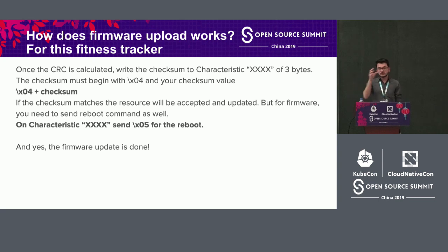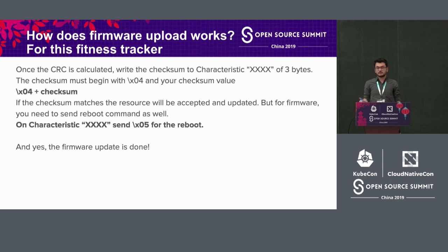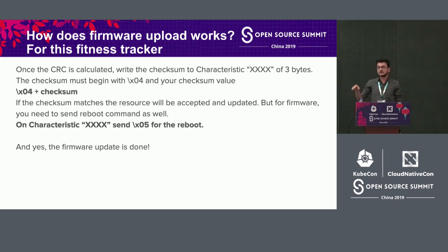Here's how the checksum flow works: after initiating with the 0x01 byte and file size, the firmware is sent 4 bytes at a time to the firmware upload service until it reaches 99%. The firmware is already transferred to the fitness tracker — now it's waiting for the checksum. You send the checksum by initiating with a 0x04 byte. If the checksum matches on the receiver side, the firmware is straight accepted. Note that it only performs error detection, not error correction — Bluetooth 5.0 has error correction. Finally, you send 0x05 to reboot the fitness tracker.